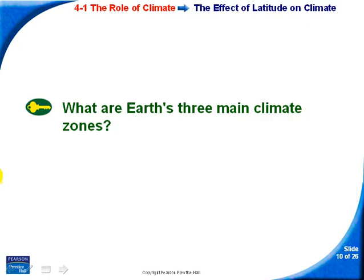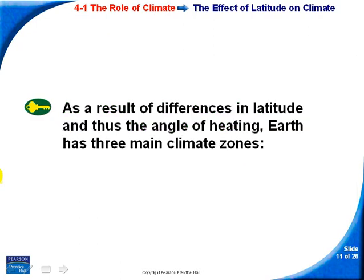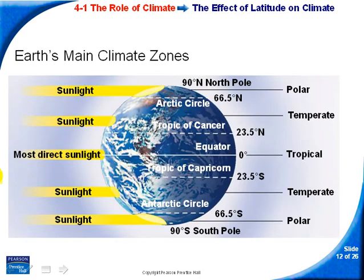Because of this angle and its effect on heating, there are three main climate zones: polar, temperate, and tropical.